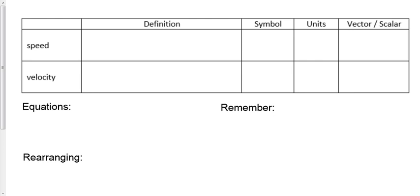Today we're going to extend that, talking about two more terms: speed and velocity. We spent a few days talking about distance, time, position, displacement — these have got to be related. What speed and velocity do is put those together; they relate time to displacement, or time to distance. Let's define another term right now: speed.